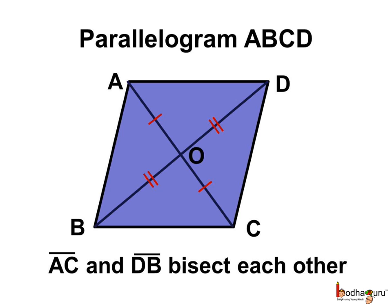And last but not the least, the diagonals bisect each other. Here AC and BD are the two diagonals and O is the point of intersection of these two diagonals. So, line segment AO is equal to line segment OC and the line segment BO is equal to line segment OD.